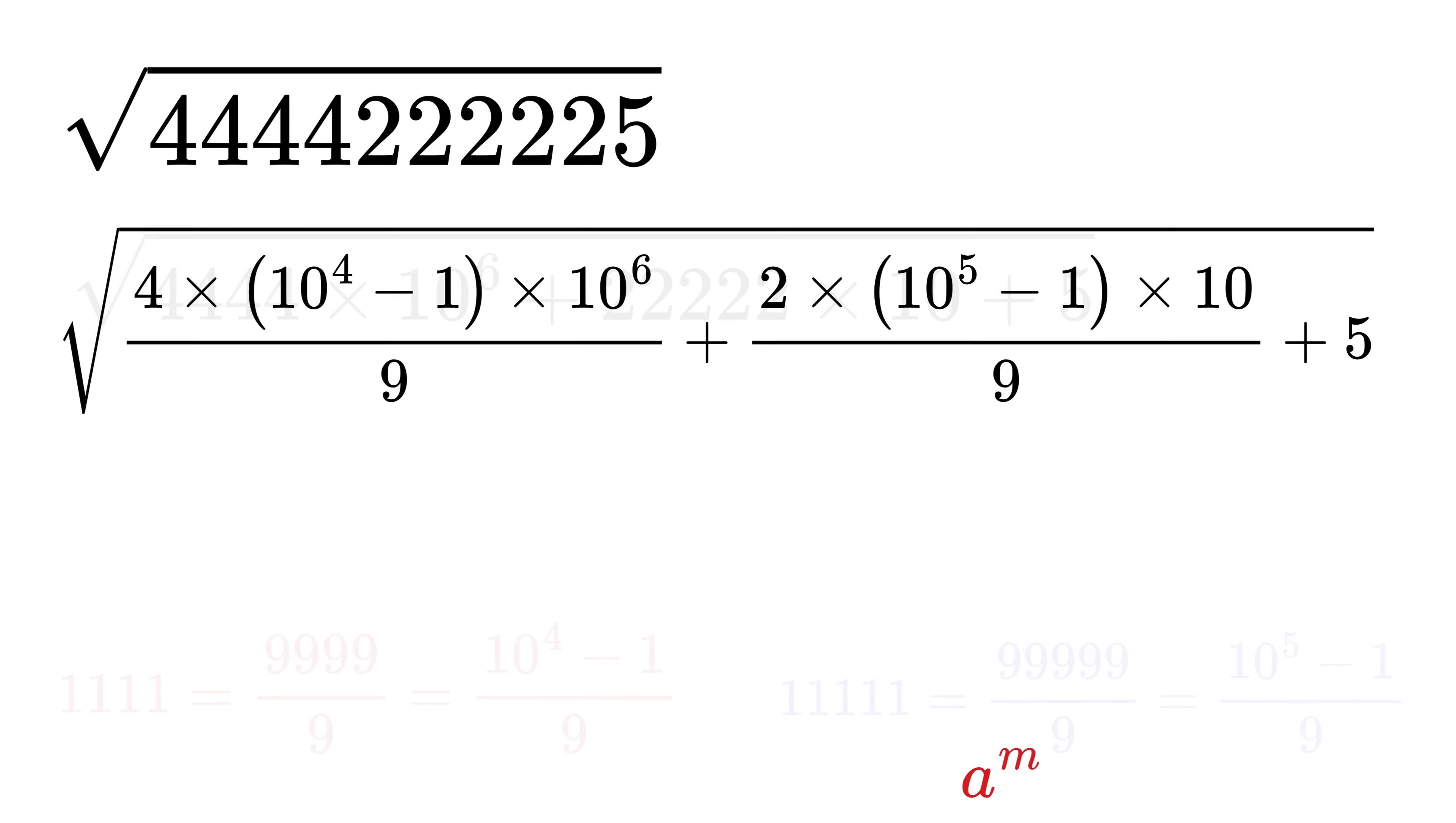Now we will use the power rule: a raised to m times a raised to n equals a raised to m plus n. So this ten to the four times ten to the six equals ten raised to ten minus this equals ten raised to six.